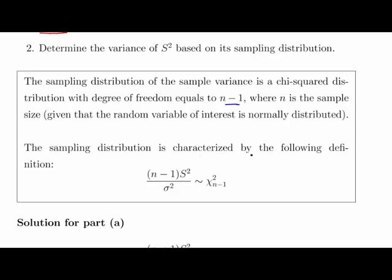So the sampling distribution is characterized by the following definition, or the following identity, I should say: (n minus 1) times s squared divided by sigma squared is a randomly distributed chi-squared variable with degrees of freedom n minus 1. So this is the fundamental thing we're asked here.